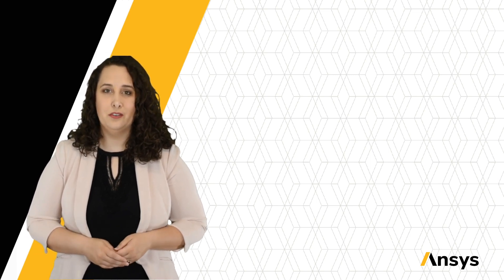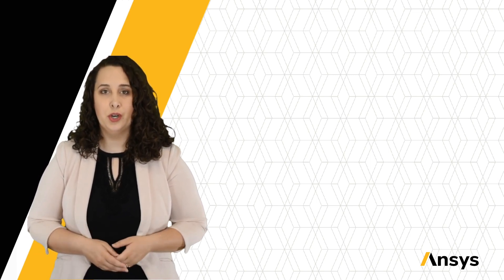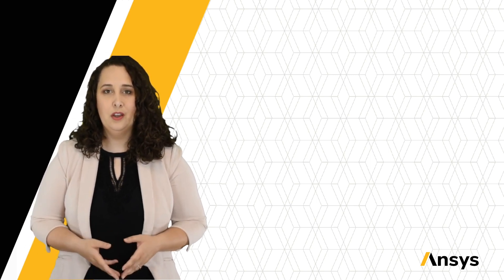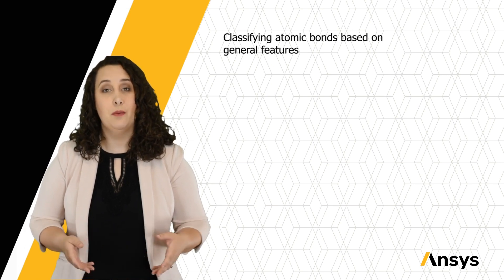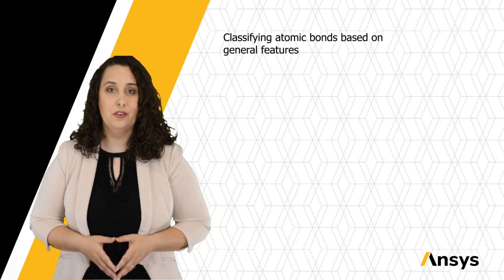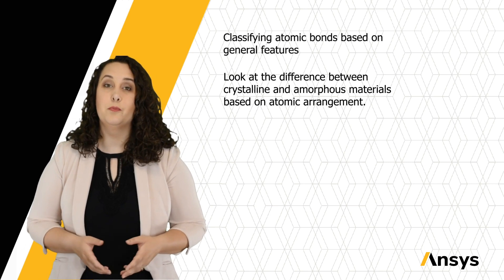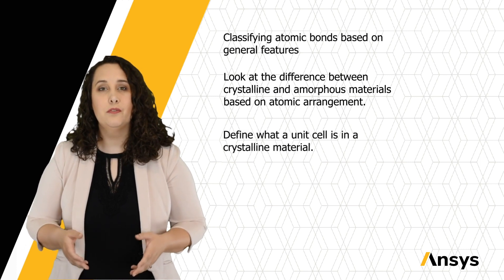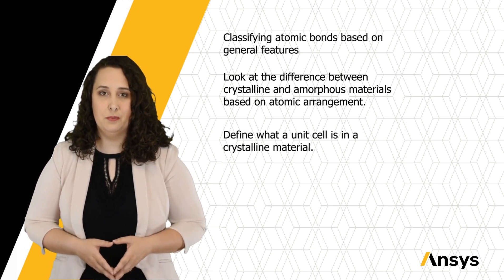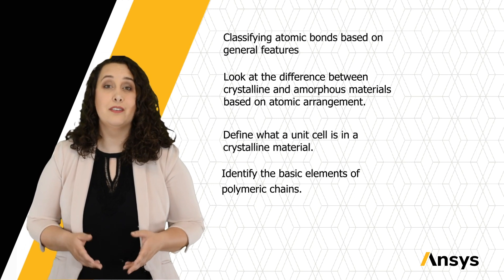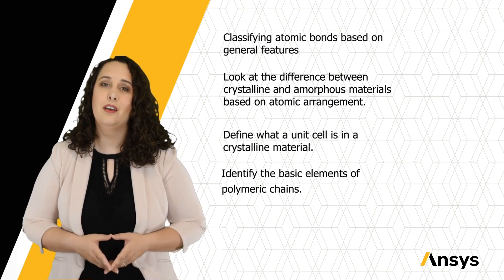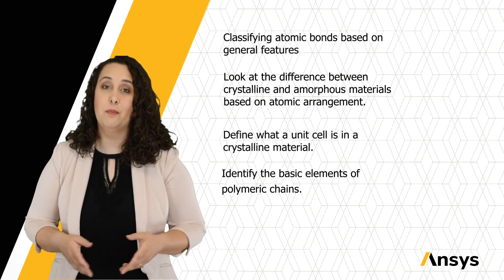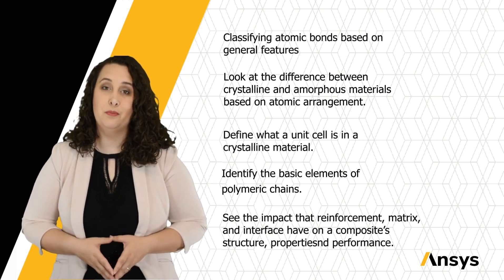In this ANSYS Innovation course on the Introduction to Material Structure, we'll be laying the foundations to understand the impact that these structures can have. We'll start by classifying atomic bonds based on general features, look at the difference between crystalline and amorphous materials based on atomic arrangement, define what a unit cell is for a crystalline material, identify the basics of polymeric chains, and finally see the impact that reinforcement, matrix, and interface have on a composite structure, properties, and performance.